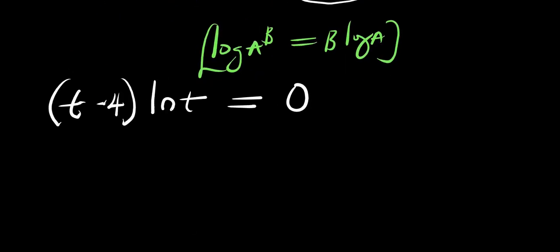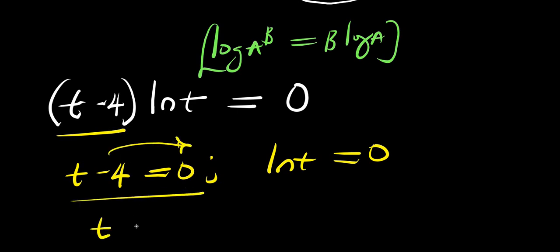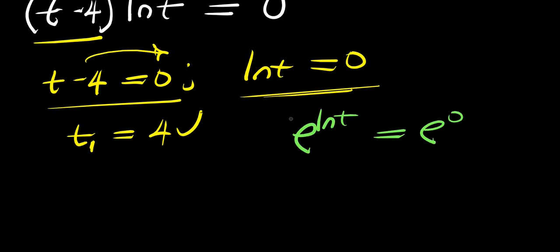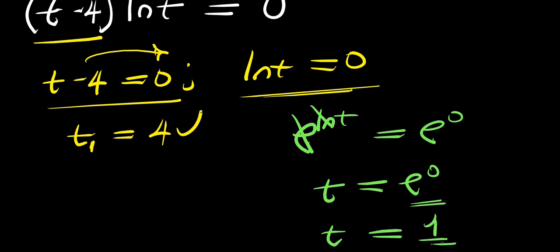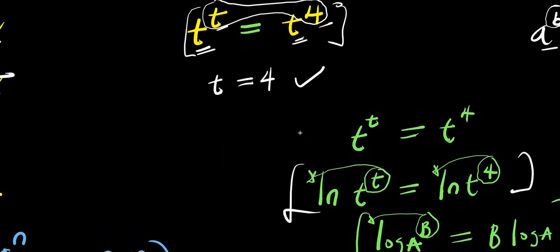So at the end, you are going to have two different equations again. You have t minus 4 equals 0, and you also have ln t equals 0. For t minus 4 equals 0, you take the negative 4 over and you have t equals 4, so this is t1. For ln t equals 0, you make use of e: e to the power of ln t equals e to the power of 0. The e cancels with ln, you have t equals e to the power of 0, and any number raised to the power of 0 is 1, so t equals 1. We still have two different solutions, meaning this equation has two different solutions.